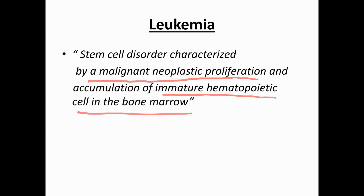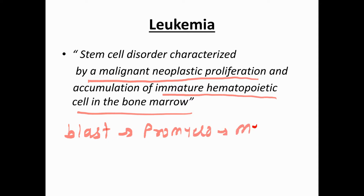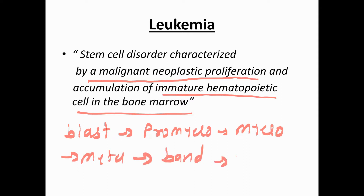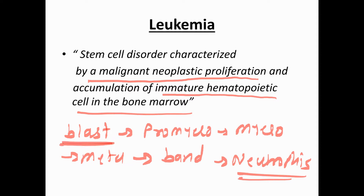Two words are most important: first, immature hematopoietic cells, and second, malignant neoplastic proliferation. Due to certain genetic mutations, the first immature cells in the bone marrow are the blast cells. From the blast there is formation of promyelocyte, myelocyte, metamyelocyte, band form, and finally neutrophil. Neutrophil is the most mature cell; blast is the most immature. If blast cells are unable to differentiate into neutrophils and accumulate in the bone marrow at more than 20%, we call it acute leukemia.